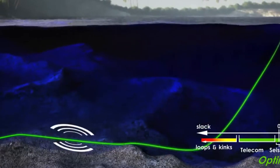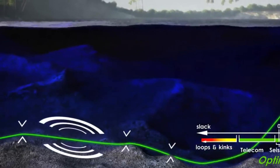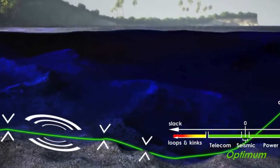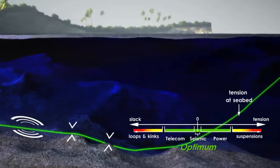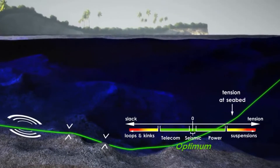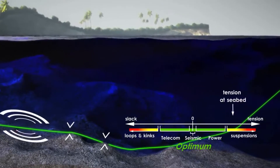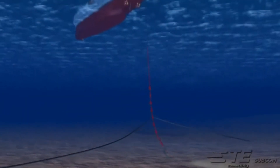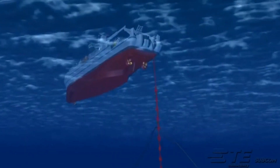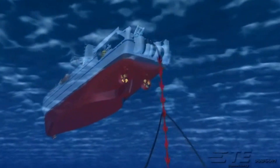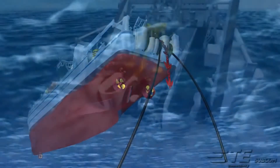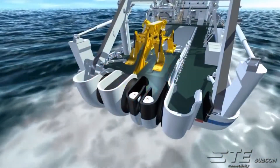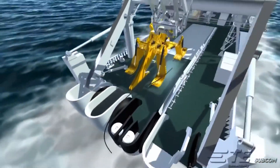Some may ask how a fiber optic cable that breaks in the middle of the sea gets repaired. In addition to natural disasters and ship anchors, underwater cable breaks often occur due to shark bites. Since humans cannot dive to such depths, cable repair is carried out by pulling the broken submarine cable using special anchors, then making the connection on the ship before lowering it back into position.